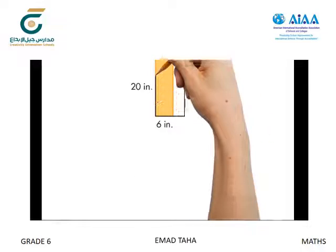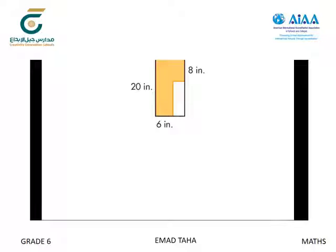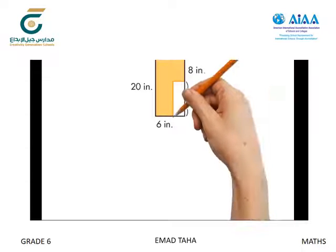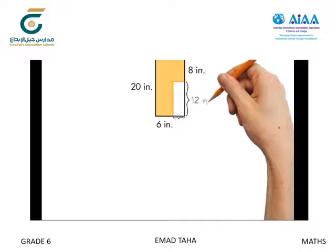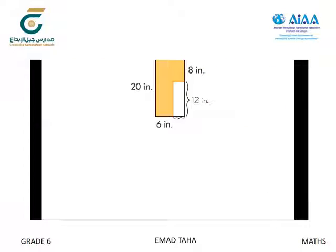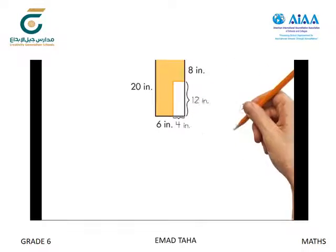Listen and look for other students who draw a rectangle around the polygon, find the total area, and then subtract the added area. These students first subtract to find the side lengths of the rectangle not covered by the polygon: 20 inches minus 8 inches is 12 inches, and 10 inches minus 6 inches is 4 inches.